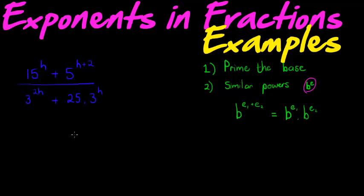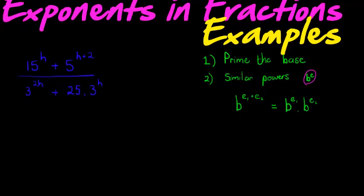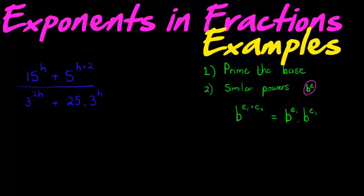Now let's look at this example. This time you'll notice the one difference is we don't have those large exponents. We now actually have an unknown in our exponents, and this usually gets people almost as confused as those large exponents. But really there's no difference. We still follow the same ideas: we prime the bases, we find similar powers.